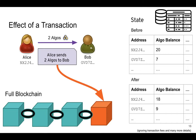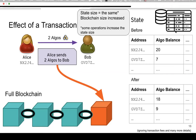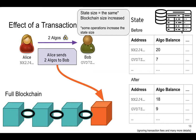Now suppose Alice sends 2 Algos to Bob. She makes a transaction, signs it with her secret key, and puts it in a block. After this transaction, the state is updated: Alice now has 18 Algos, Bob has 9. The state size after the transaction hasn't even changed — we just updated two numbers. The blockchain size increased by adding the transaction to the full list. Many transactions don't even increase the state of the blockchain, so the state stays much smaller.